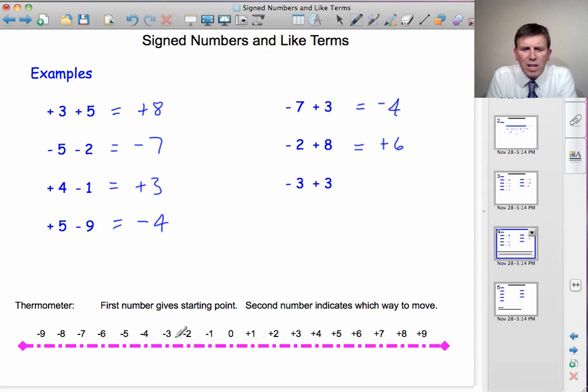And finally, minus 3 starting point. Add on 3. 1, 2, 3. And we get to 0.